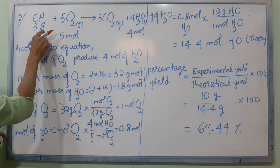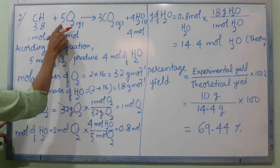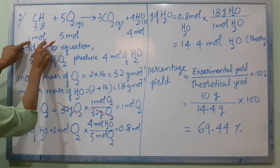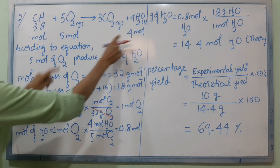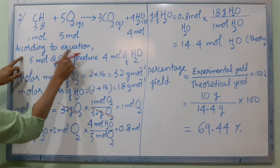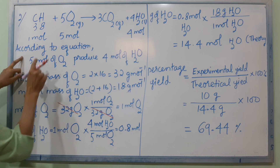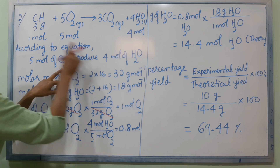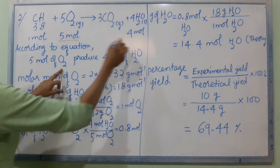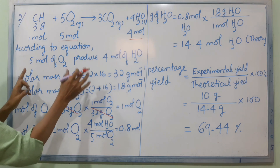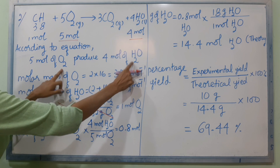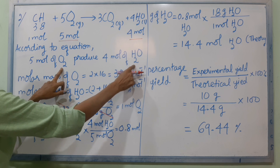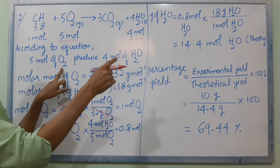This equation is C3H8 propane plus O2. Propane 1 mole, oxygen 5 moles, H2O 4 moles, according to the equation. 5 moles of O2 produce 4 moles of H2O.